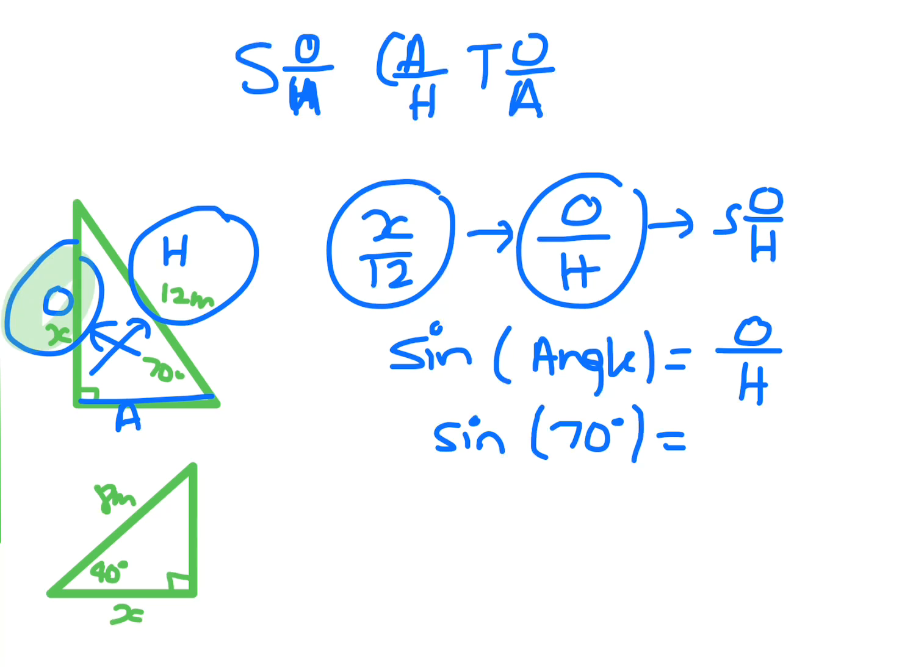What is the opposite side? Well, the opposite side is your X. So put X on top. And what is the hypotenuse? Well, the hypotenuse is the H. So that's what's going to go on the bottom for the H.